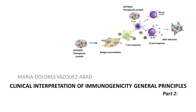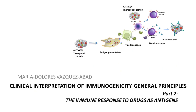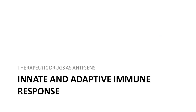In part two of these general principles for clinical interpretation of immunogenicity, we'll discuss the immune response to drugs as antigens. The response from the immune system to therapeutic drugs that act as antigens includes innate and adaptive immune responses that are no different from those to any other kind of perceived danger.